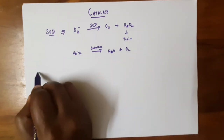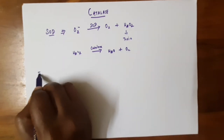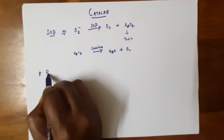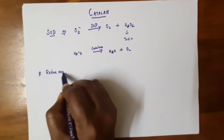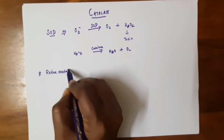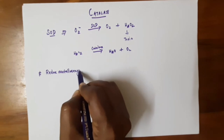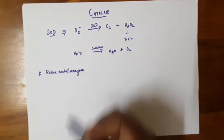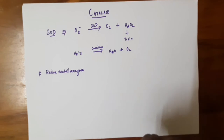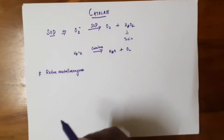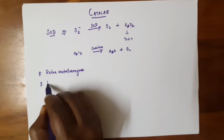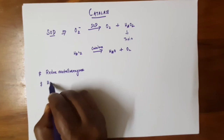Catalase converts hydrogen peroxide to water and molecular oxygen. Catalase is an example of a redox metalloenzyme because it takes part in reduction and oxidation reactions. It is a heme-containing protein.